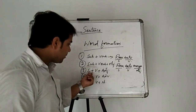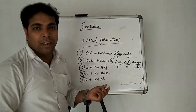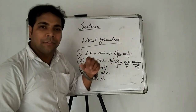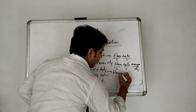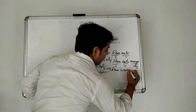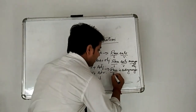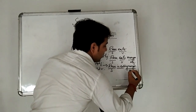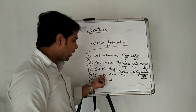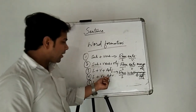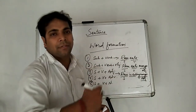Now let us look at the third type: subject plus verb plus adjective. Let us understand first what is adjective. A word which explains about a noun — that we call adjective. Now let us look at the fourth type: subject plus verb plus adverb. Let us first understand what is adverb. A word which describes about a verb — that we call adverb.